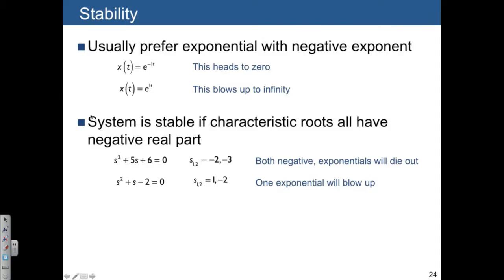So when we talk about stability, we usually prefer exponentials with a negative exponent. e to the negative 1t is going to head to zero. e to the positive t is going to blow up to infinity. So we say a system is stable if all of the characteristic roots have negative real part. And here are two examples.